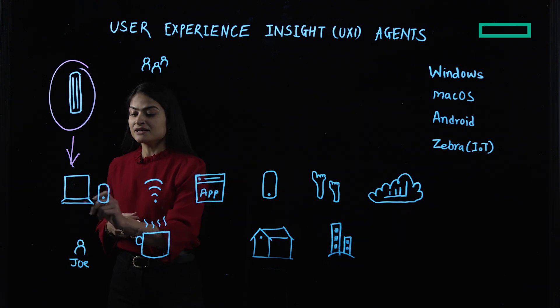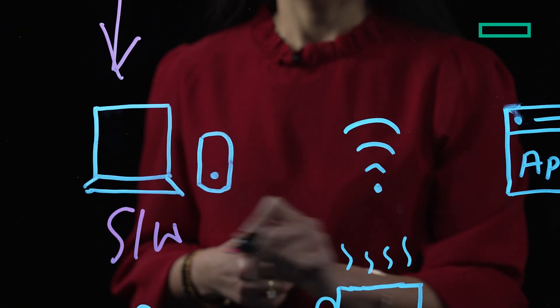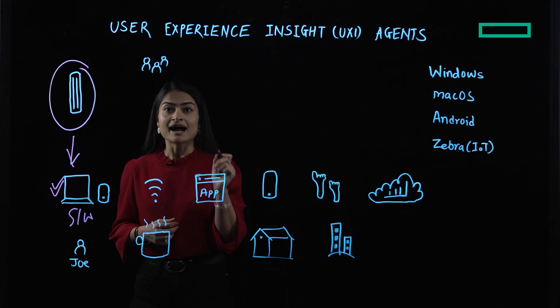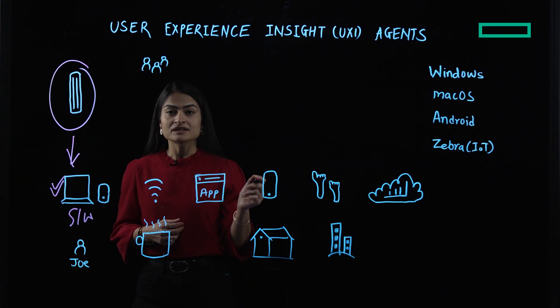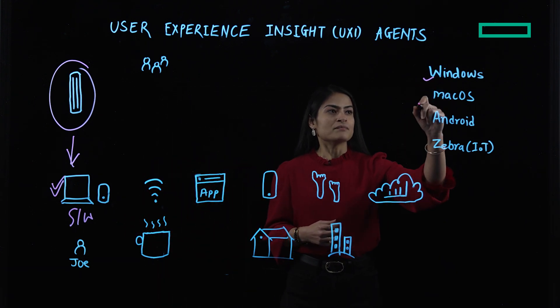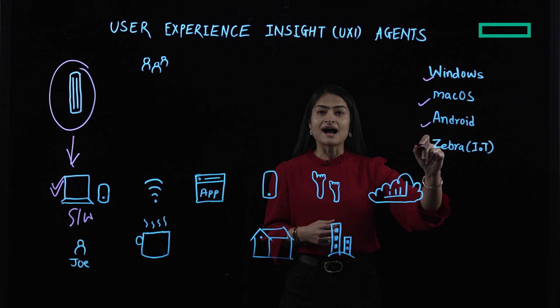Essentially, a UXI agent is a software application that runs on end-user device to show you what users are actually seeing or experiencing on your network. Right now, we support deployments for Windows, MacOS, Android, and Zebra.